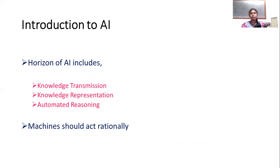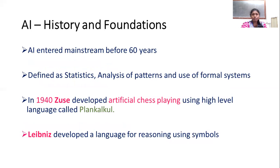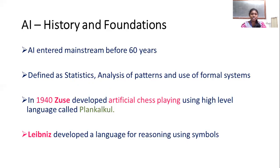Automated reasoning is part of artificial intelligence. The working base started in the 1940s — artificial chess playing, which is a high-level programming language application, started in 1940. That is where artificial intelligence first started.